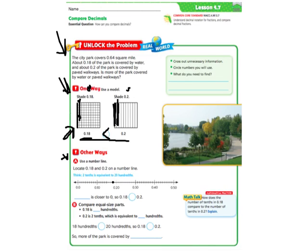Two tenths is the same as twenty hundredths, because you can add a zero on to the back and it doesn't change it. So you would say that eighteen hundredths is closer to the zero, so it's less than two tenths.